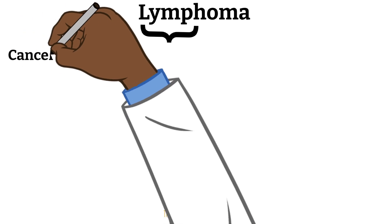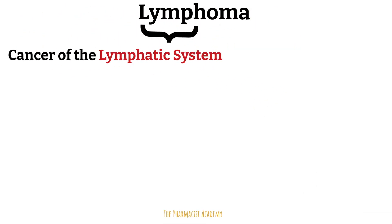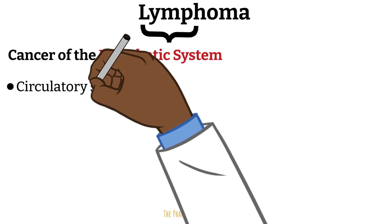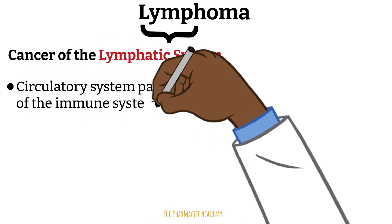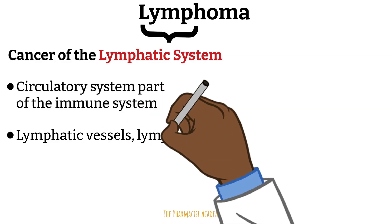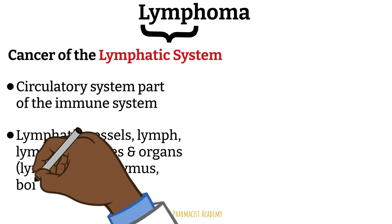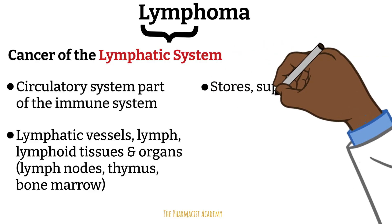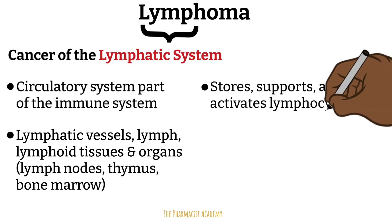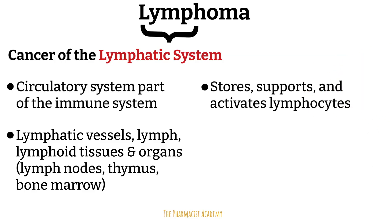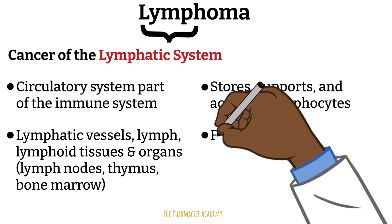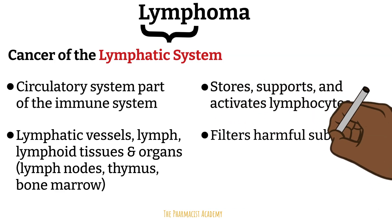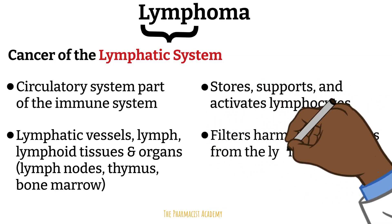Lymphoma refers to a cancer of the lymphatic system. The lymphatic system is a circulatory system that's part of the immune system. It consists of lymphatic vessels, lymph, and lymphoid organs or tissues like the spleen, thymus, bone marrow, tonsils, and lymph nodes, which house immune cells like lymphocytes. The lymphatic system helps store, support, and activate lymphocytes.